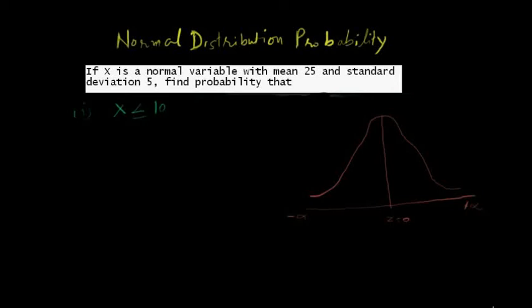Today we will solve a very important question of normal distribution. In this question we have to calculate normal distribution probability. First of all I want to tell what is probability. Probability is the expectation of happening or not happening any event. And in this question we have to calculate probability of X less than or equal to 10.